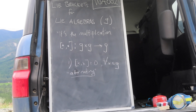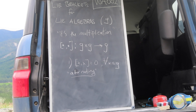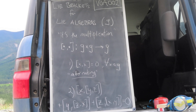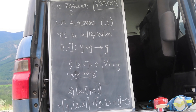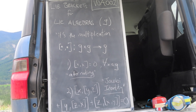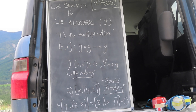First, it's alternating, which is to say that the bracket of any item in G with itself vanishes. Second, when considering brackets of brackets, the Lie bracket must satisfy the so-called Jacobi identity, which you derive from the first term by cyclic permutations. A vector space equipped with a Lie bracket is called a Lie algebra.